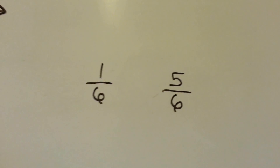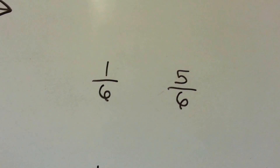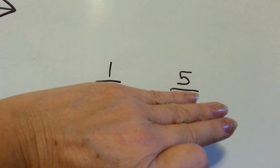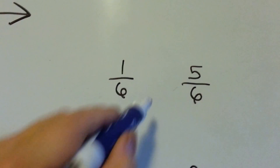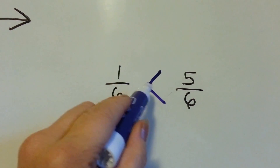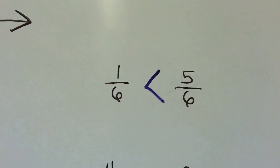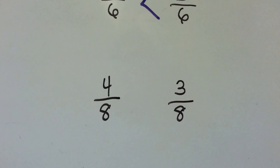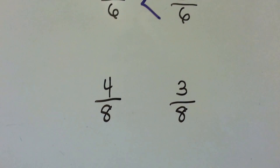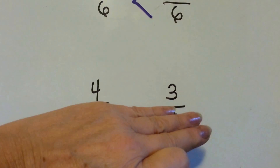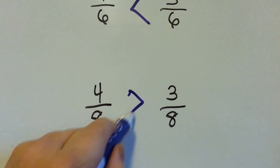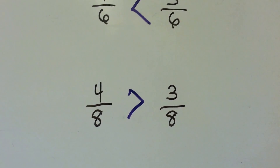One-sixth or five-sixths — which one's bigger? Which one's bigger, one or five? The five is. One-sixth is less than five-sixths. Four-eighths or three-eighths? Which one is more, four or three? The four is bigger. Four-eighths is greater than three-eighths.